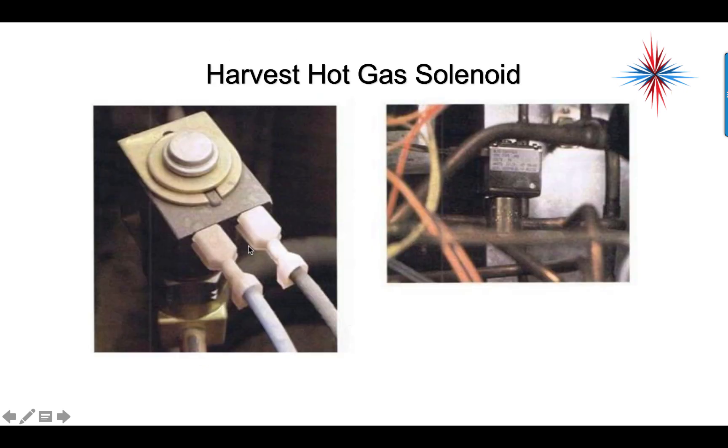Harvest gas hot gas solenoid is just like any other hot gas solenoid. Two power, L1 and neutral, or L1, L2 come into it. It's a mechanical electrical part. The top of this, which is the coil, can be replaced without recovering refrigerant - it's two separate parts. It's very rare for the mechanical side of this to fail. Nine out of ten times, it will be the electrical side of it that fails.